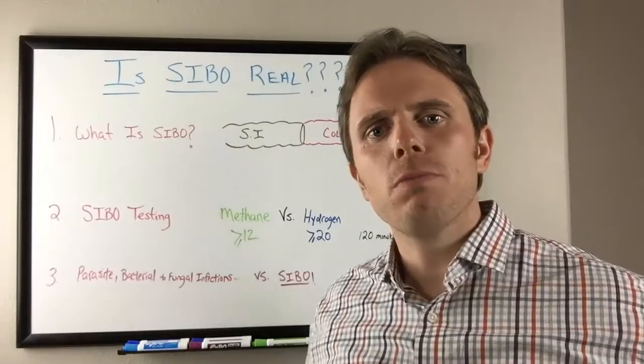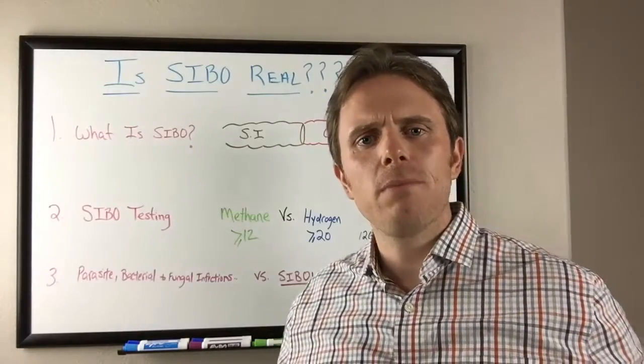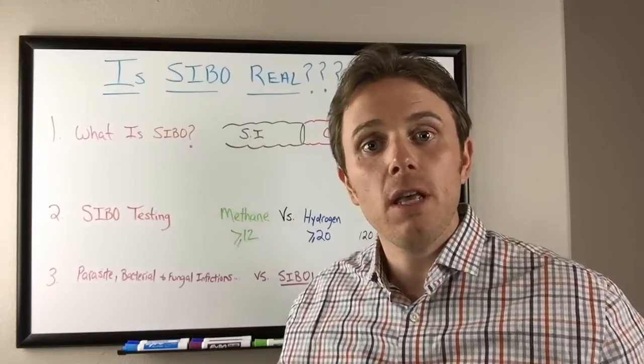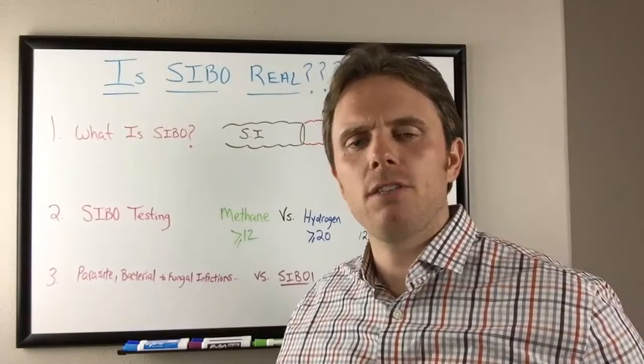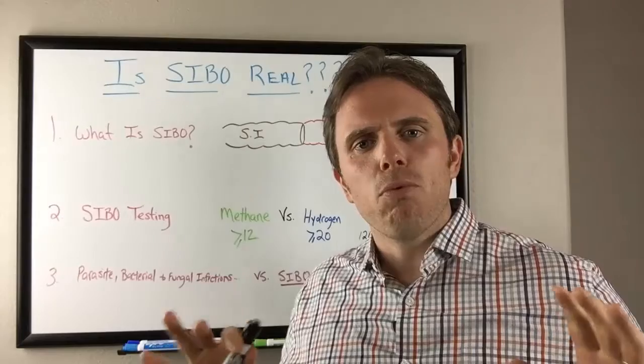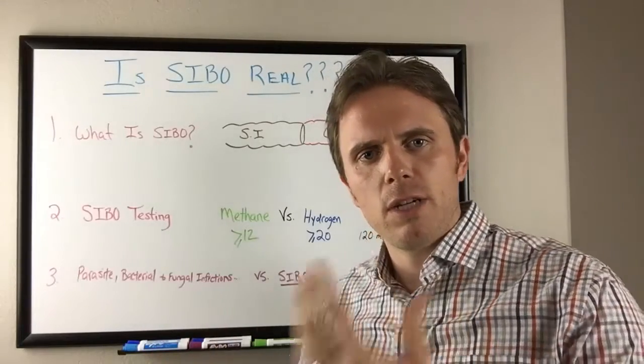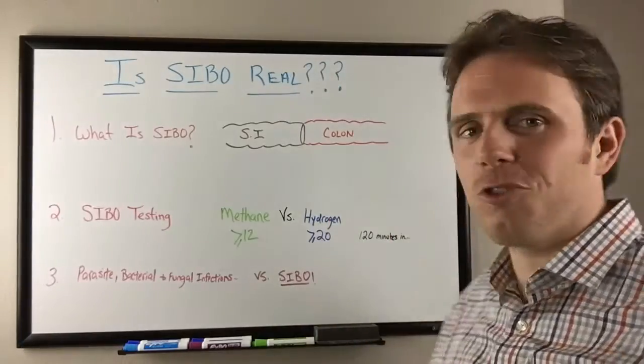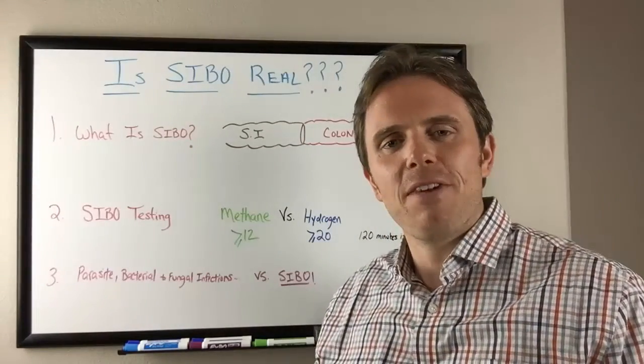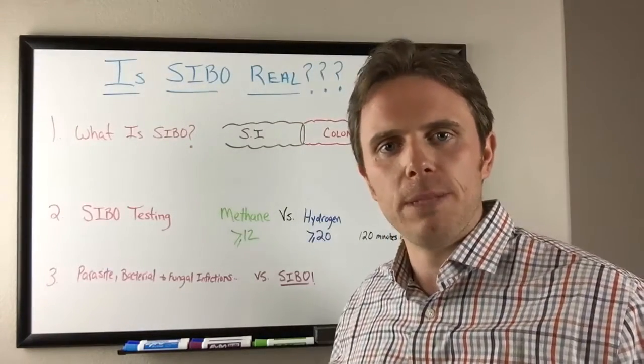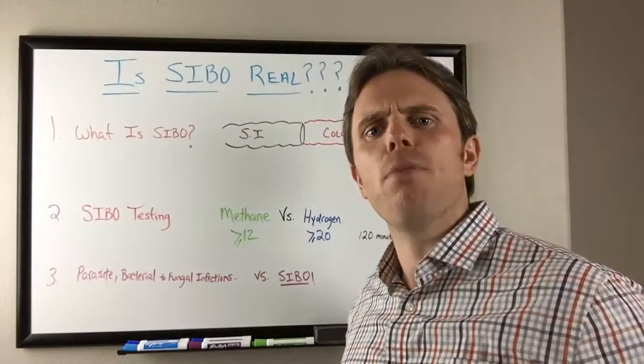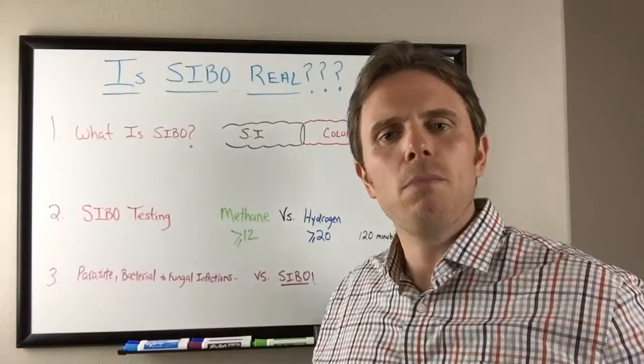SIBO is an acronym for small intestinal bacterial overgrowth, and I'm seeing a lot of patients coming into my office today with breath testing already completed. I'm even referring them out to get breath testing as well, but let's break down SIBO and some of the constituents. I'm trying to be a little bit controversial in my title here because I'm having a lot of people that are thinking they have SIBO and they may have the symptoms of it, they may even test positive on the test for SIBO, but the question is what is the root cause of the SIBO?